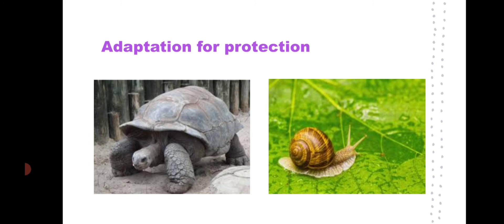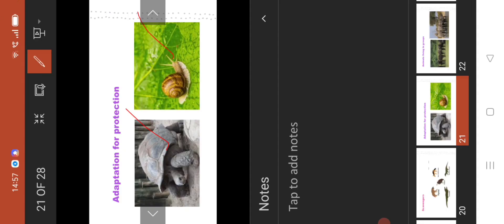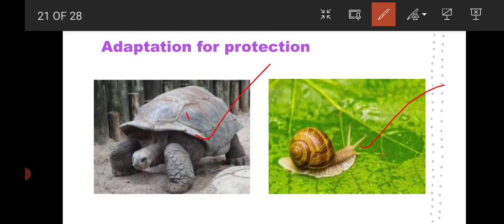How do animals adapt themselves for protection? The tortoise and the snail have hard shells. Whenever danger comes, the tortoise will hide inside its shell. Similarly, the snail also hides inside its hard shell for protection.